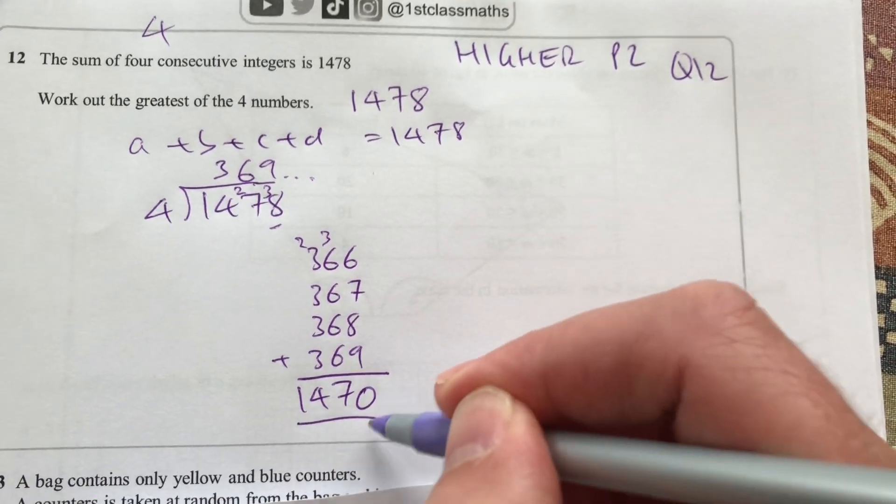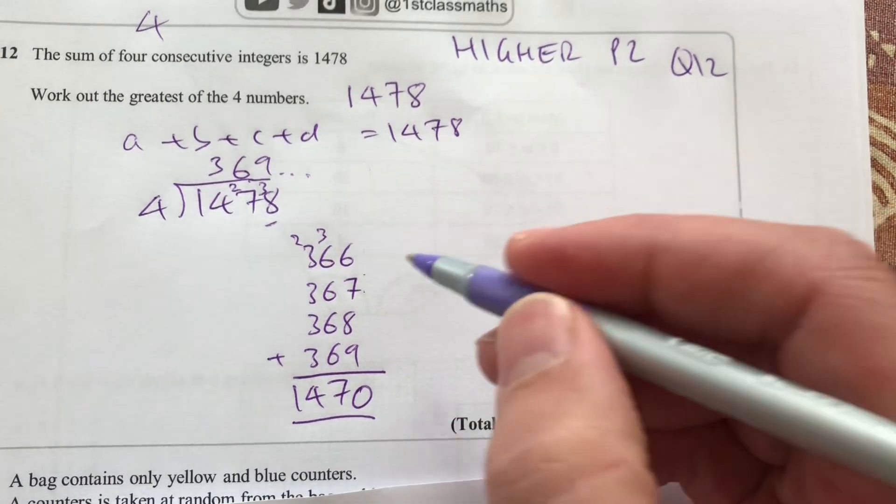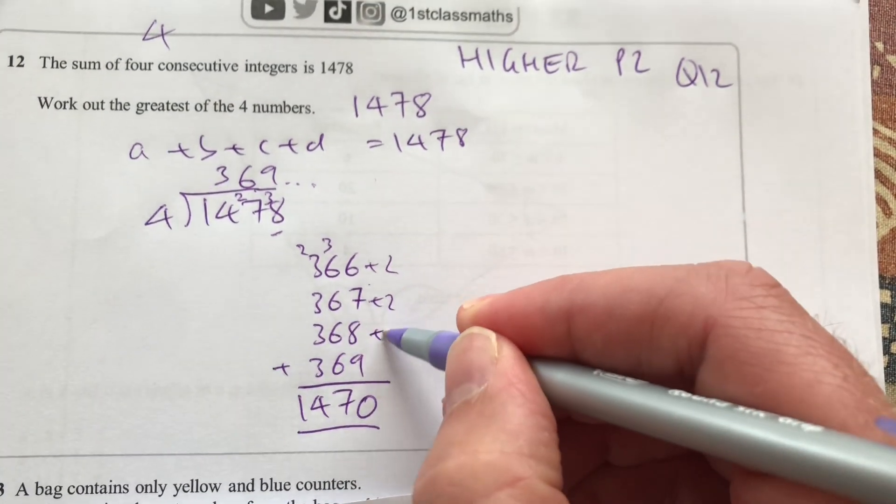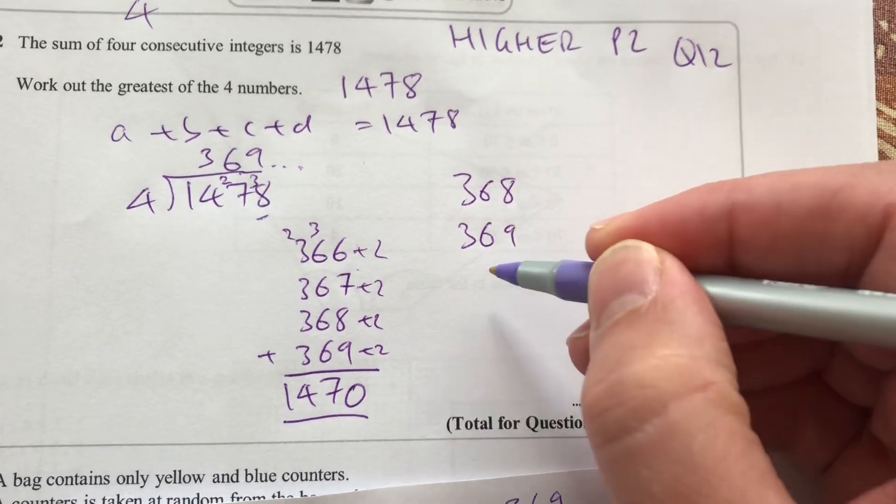So I'm 8 lower than I want. So if I added 2 to each of those, I should get the answer. So if I start at 368, 369,